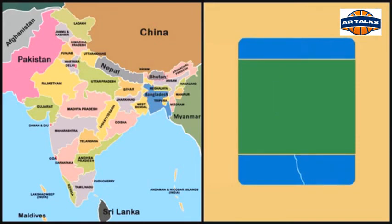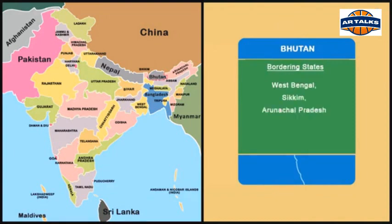The Indian states West Bengal, Sikkim, Arunachal Pradesh and Assam share the border with Bhutan. The border length is 699 km.